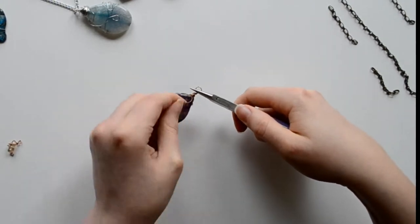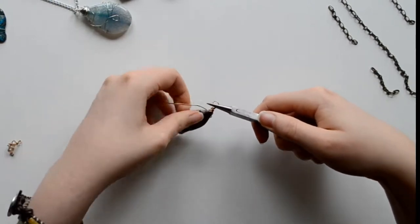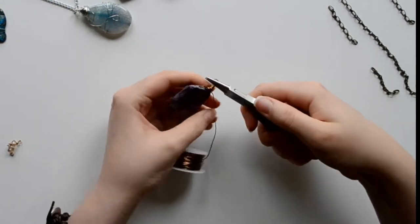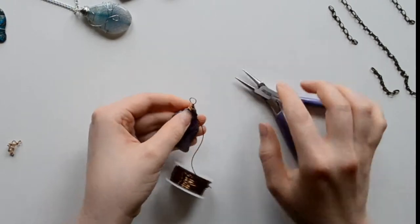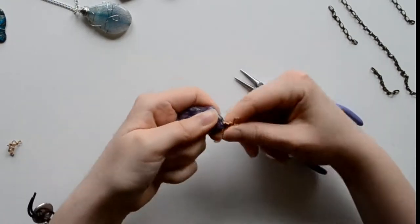And you're just going to keep wrapping and checking and make sure it's overlapping correctly and it's nice and snug around your bead and the wires. So initially, you're just making a bead cap for your bead.